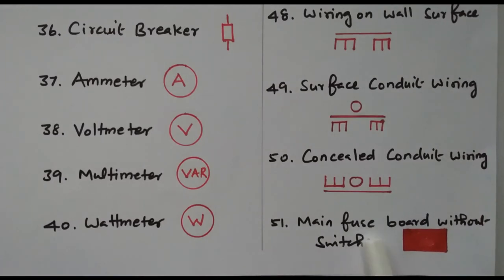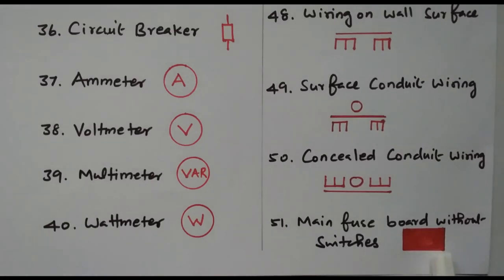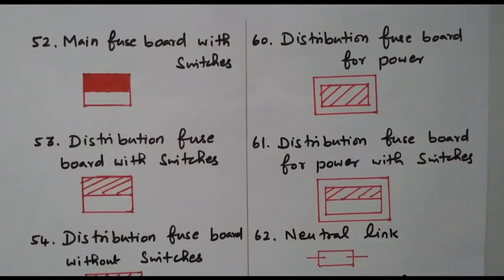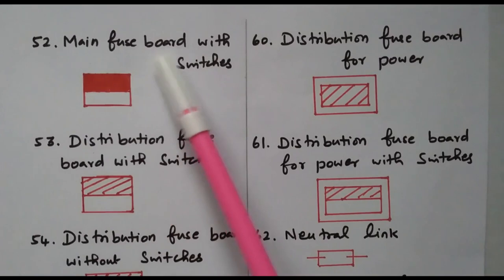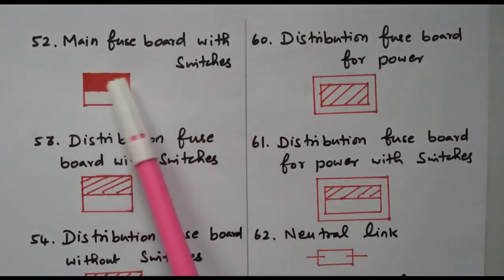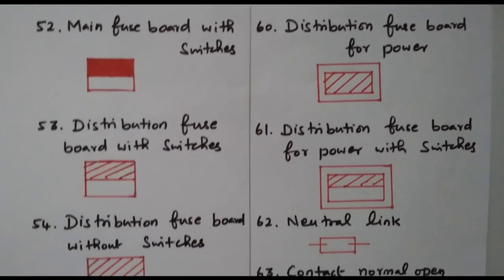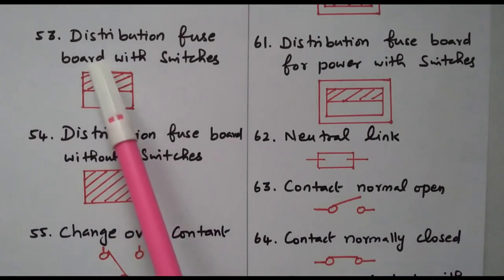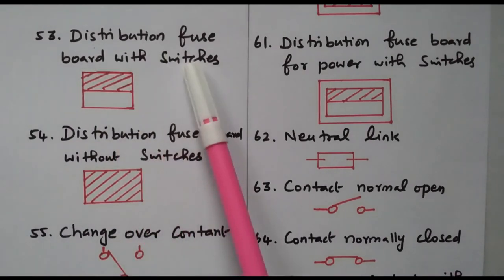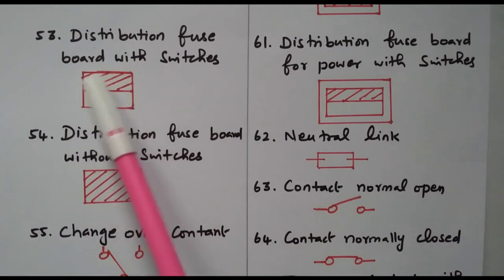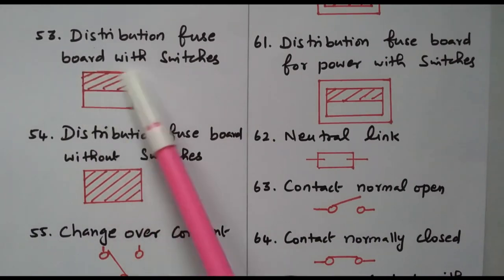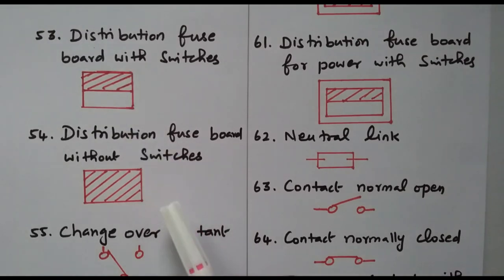Main fuse board without switches is represented by one fully shaded rectangle. Main fuse board with switches is half shaded — previously fully shaded meant no switches, now half shaded indicates switches are available. Then distribution fuse board with switches uses cross lines in the half-shaded portion, while without switches it is fully shaded.